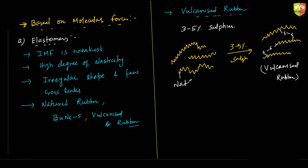This is natural rubber, and the result is vulcanized rubber. They have asked about vulcanized rubber many times in both competitive exams and board exams. The key point to remember is that natural rubber is heated with 3 to 5 percent sulfur. In competitive exams, the question asks what rubber is heated with during vulcanization — sulfur is the answer.